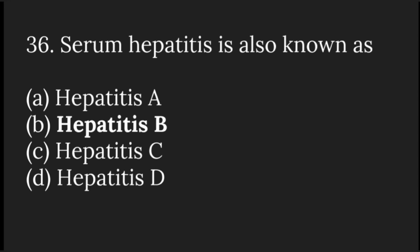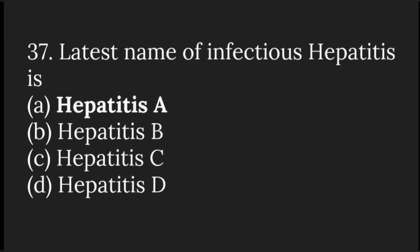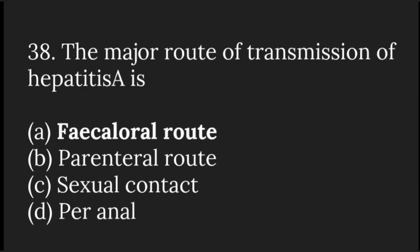Serum hepatitis is known as hepatitis B. The latest name of infectious hepatitis is hepatitis A. The major route of transmission of hepatitis A is the feco-oral route, meaning contamination of food or water by fecal matter which is then ingested.